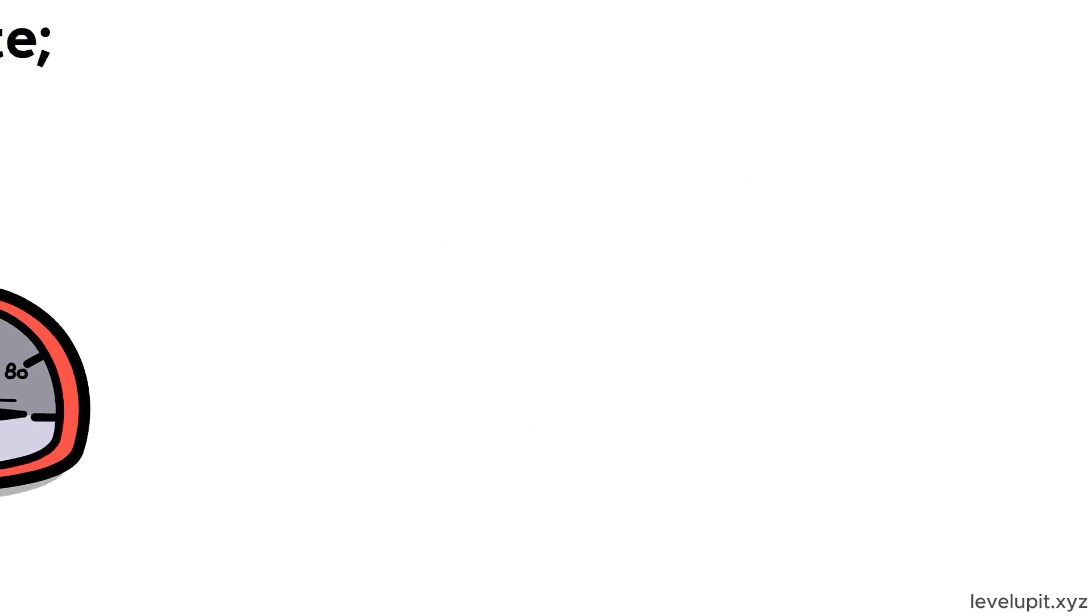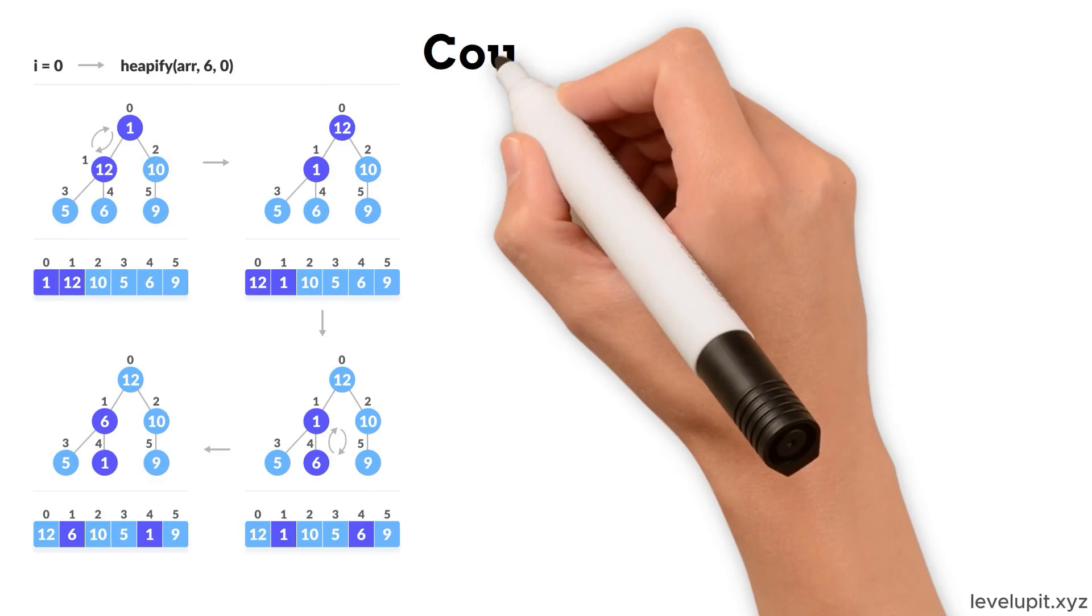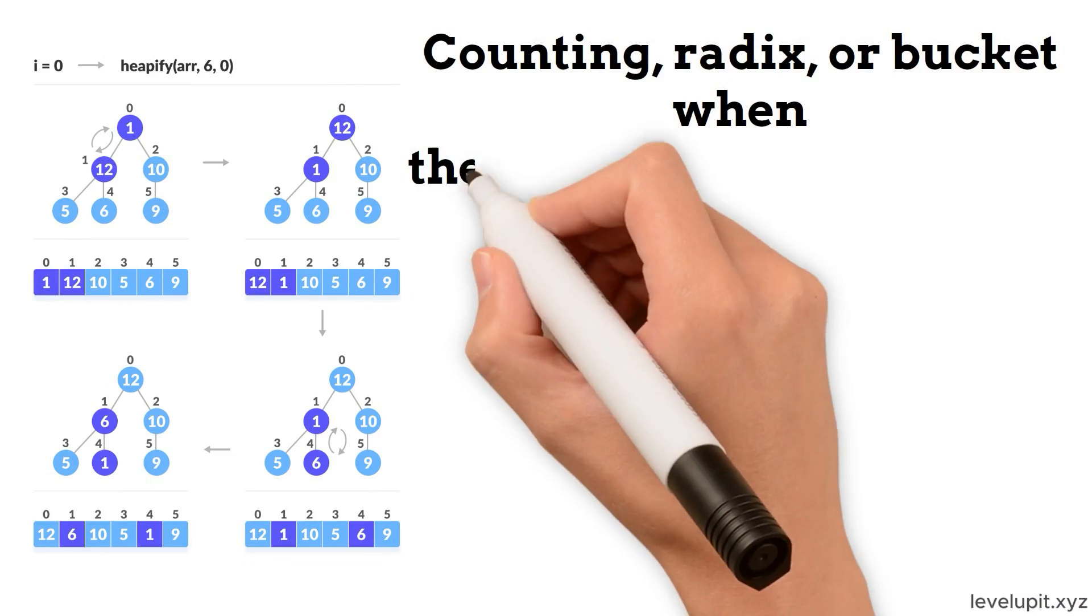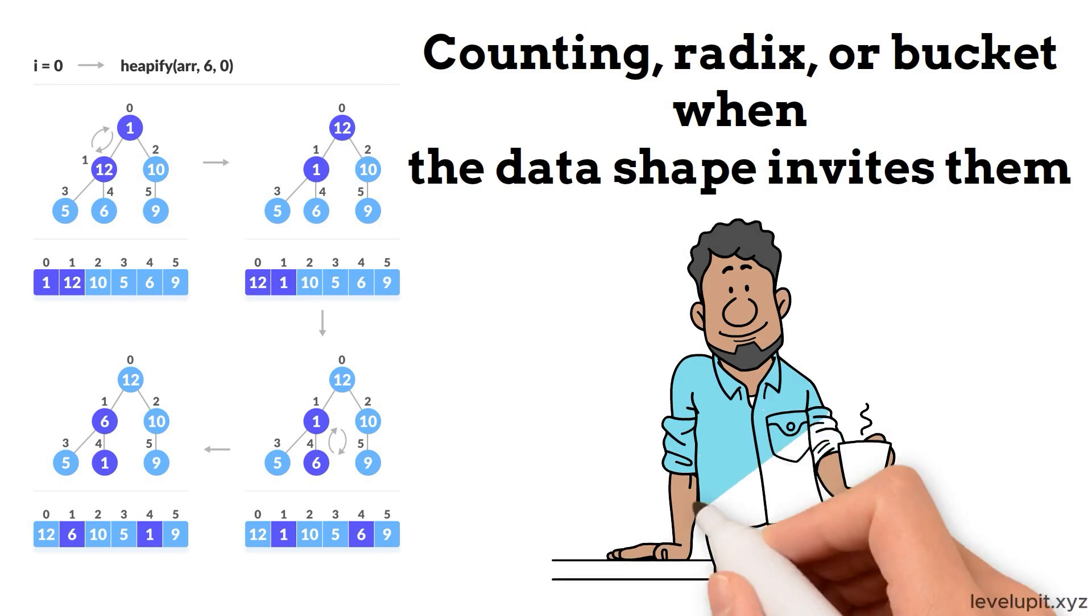Pick quick when you want fast, in-place speed with good pivot choices. Keep a heap when the top item is all you need at any moment. And grab counting, radix, or bucket when the data shape invites them. Once this becomes habit, code feels smoother, results arrive faster, and organizing information becomes a quiet advantage instead of a constant hurdle.